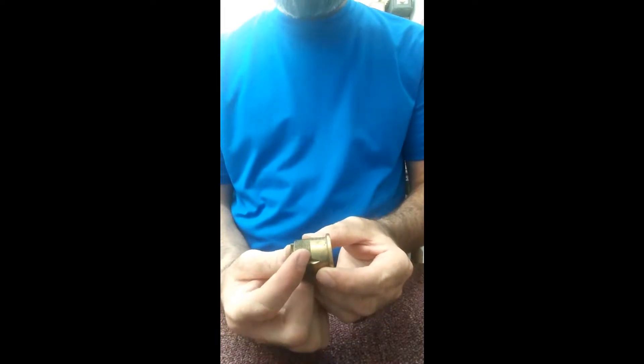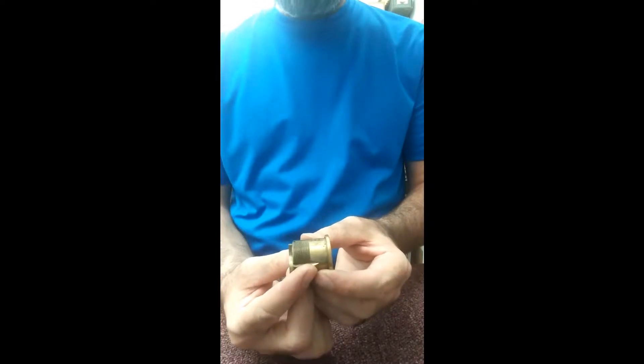Hey, good afternoon. Lockdoc back here with another shimming guide. Today we're going to be talking about mortise cylinders. You can always tell a mortise cylinder because they have the threads back here to thread into a mortise case.